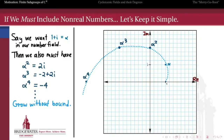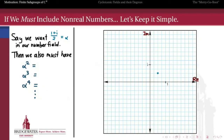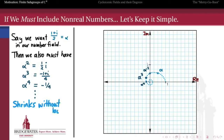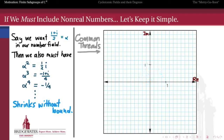Let's try cutting that in half: 1 plus i over 2. If we want this number in our number field, then we also have to have its square, which is i over 2; its cube, which is minus 1 plus i all over 4; its fourth power, which is negative 1 fourth; and so on. But these powers, instead of growing away from the origin, are actually shrinking in toward the origin without bound. So again, maybe this isn't the most efficient way in order to get 1 plus i over 2 in our number field.